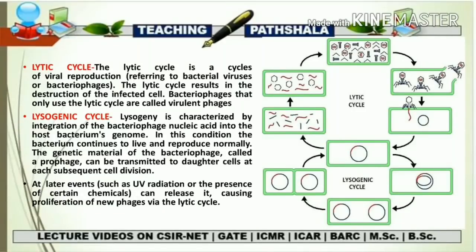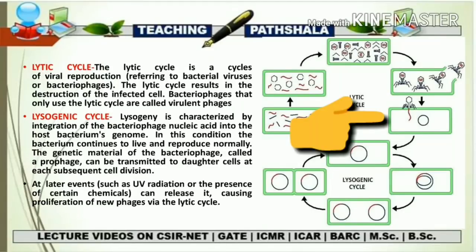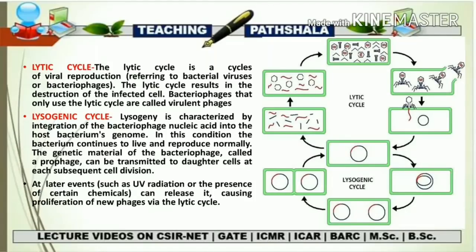From the figure, you can see the first stage in a lytic cycle is attachment — the phage attaches to the surface of the host bacterial cell to inject its DNA. The second step is penetration, where the phage injects its DNA through the cell membrane. The third step is transcription — the host cell DNA is degraded and the cell's metabolism is directed to initiate phage biosynthesis, using the host cell's overall machinery.